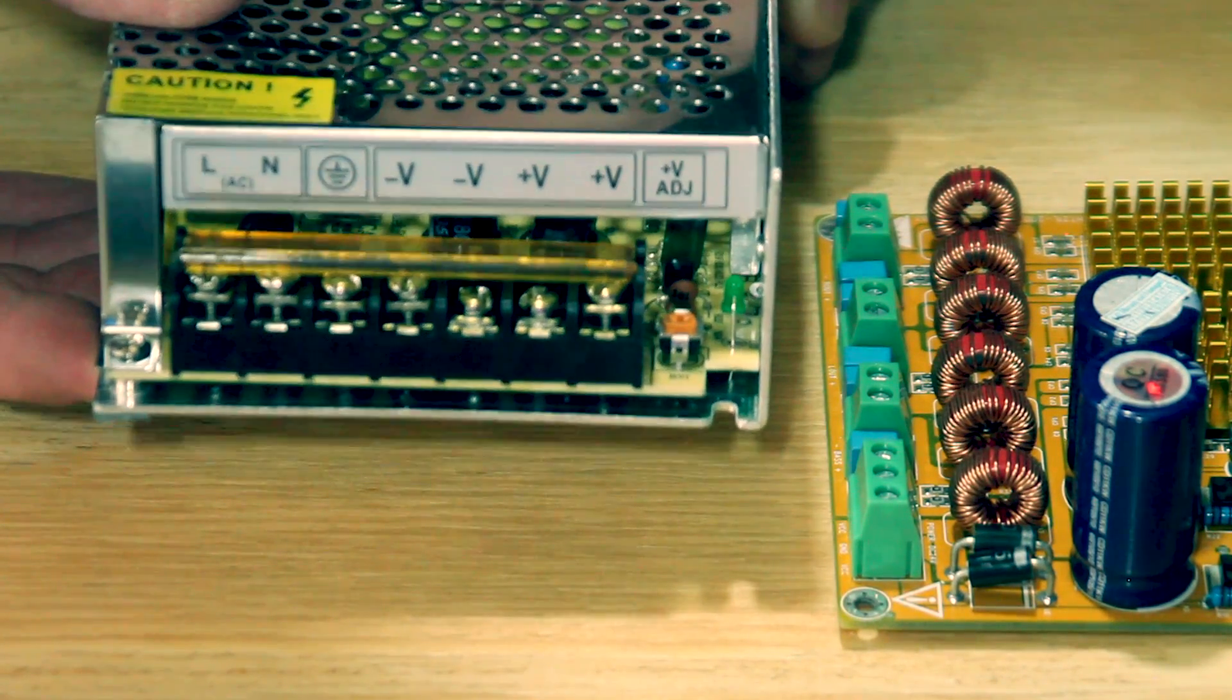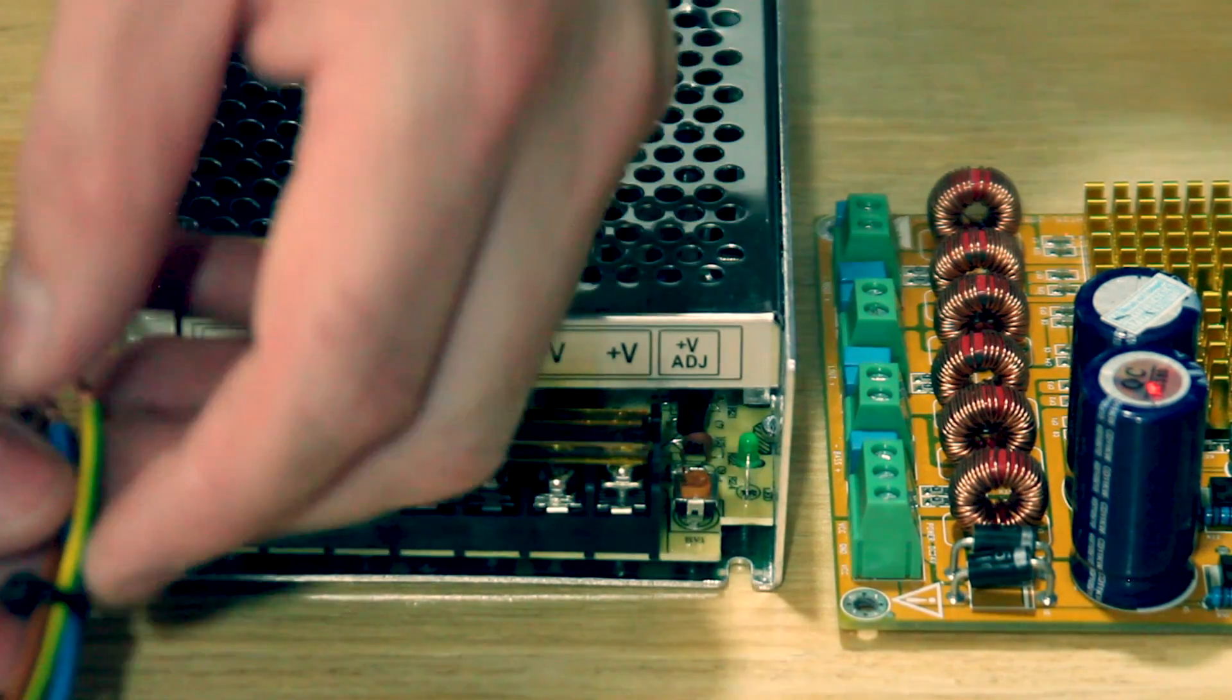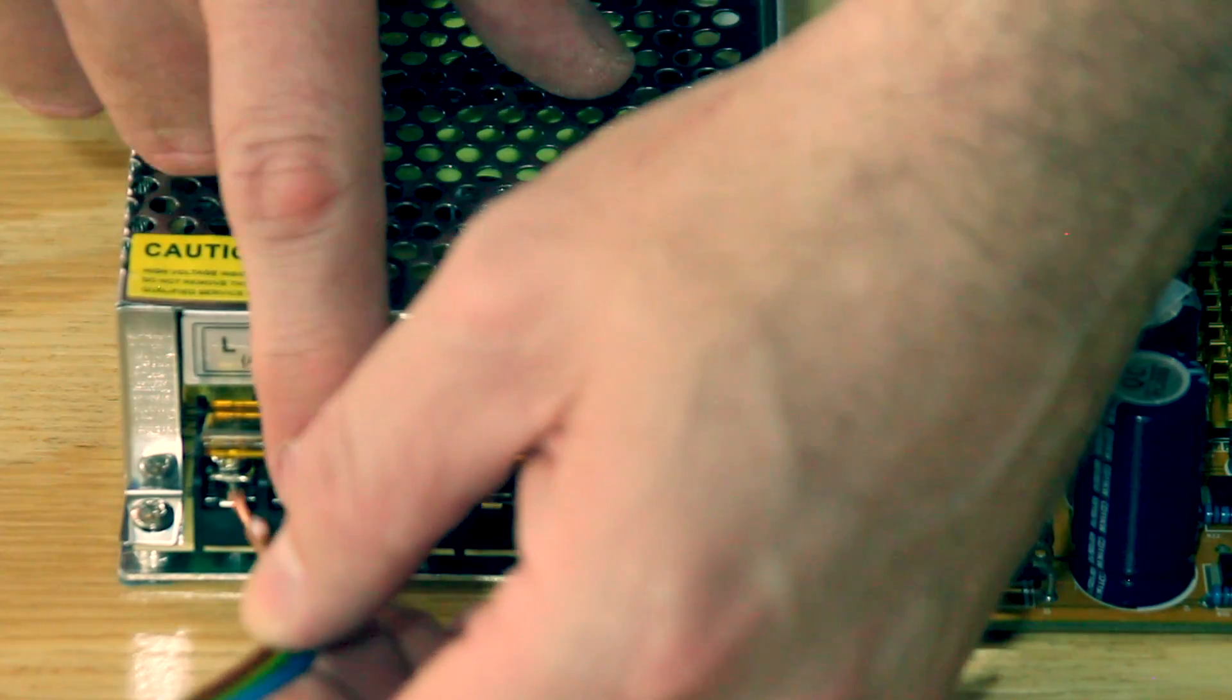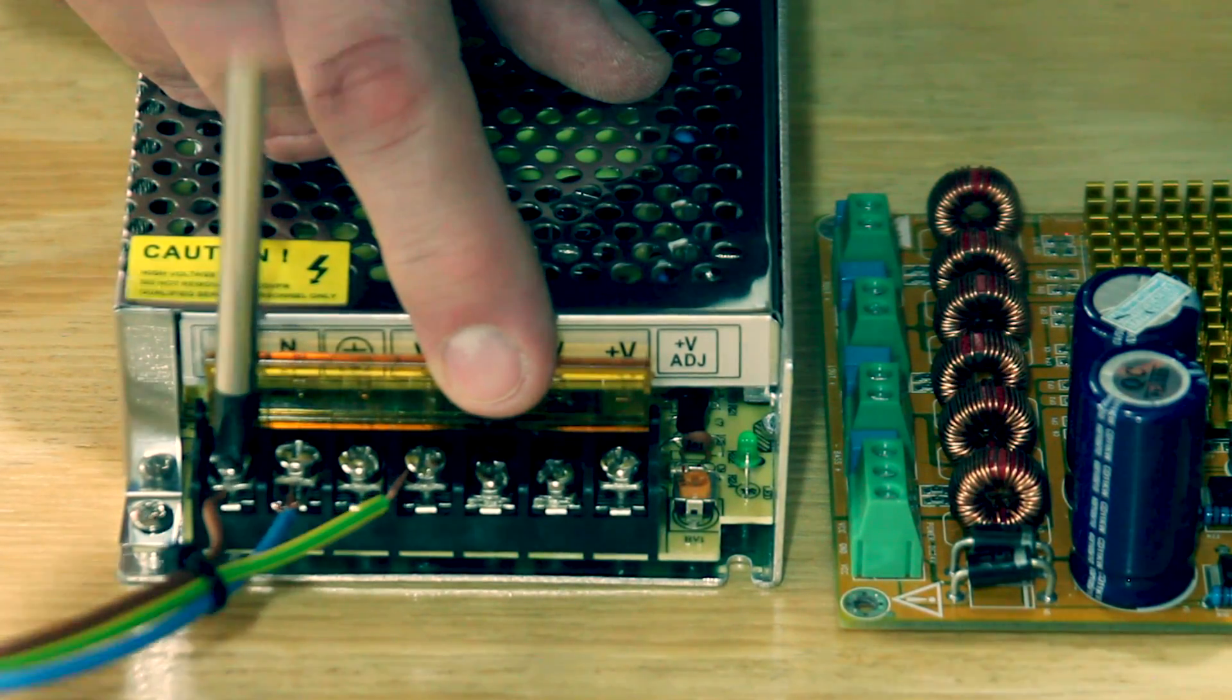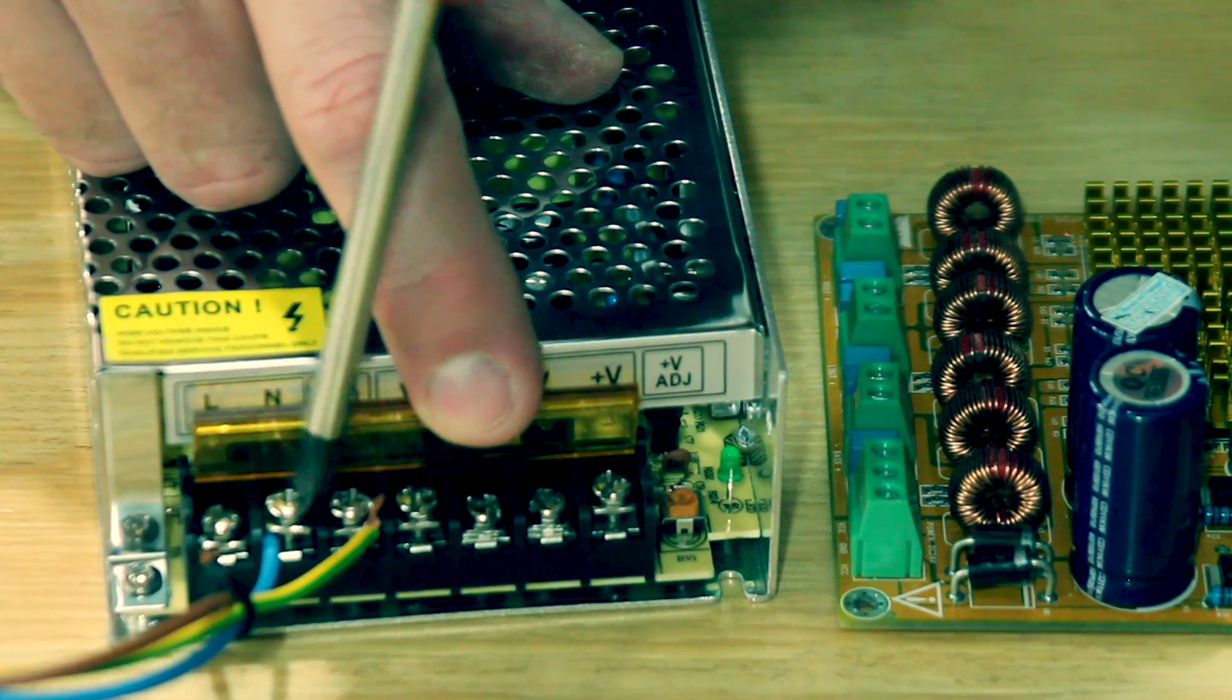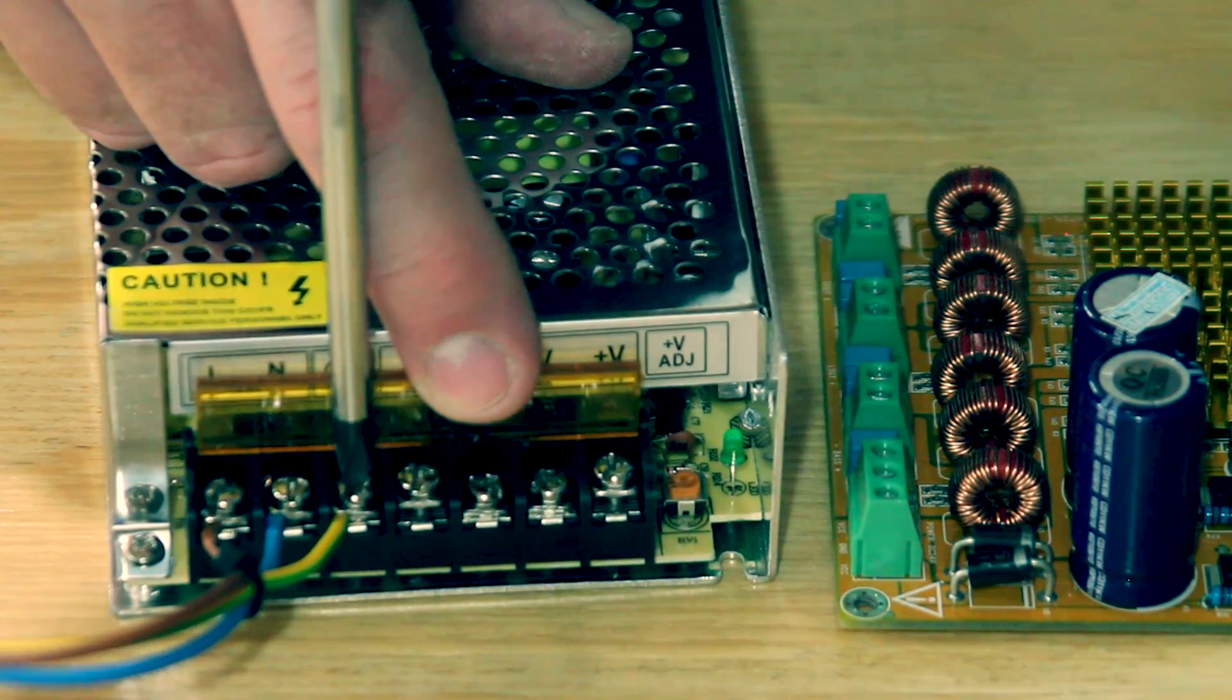Okay, now on that power supply here, you have your mains input. So you have live, neutral and ground. Okay, so you want to prepare your wires that's going to come from your main socket. So I've just gone with the normal color wires that you will generally get. You have brown for live, blue for neutral and green yellow for ground. So let's quickly attach these. You don't want to over tighten the screws, you just want to make sure that it's nice and tight like that.